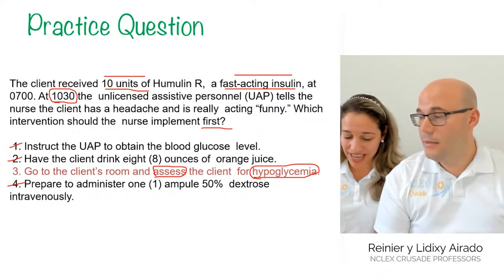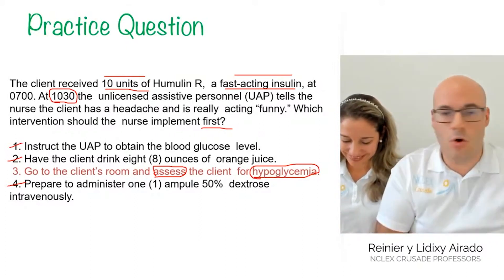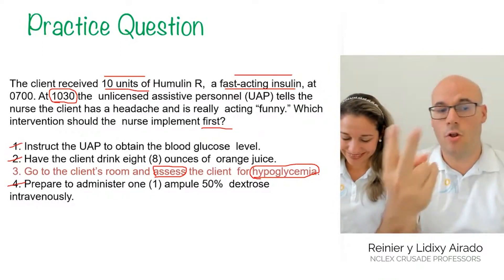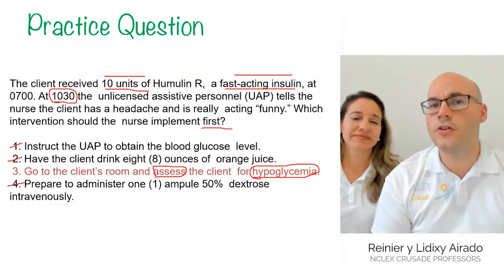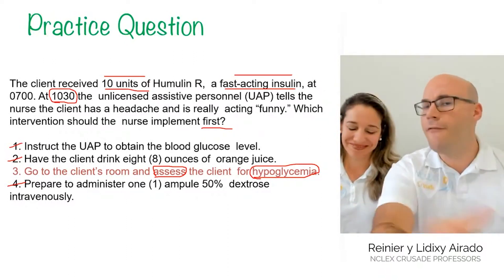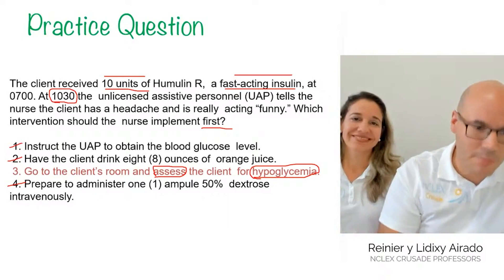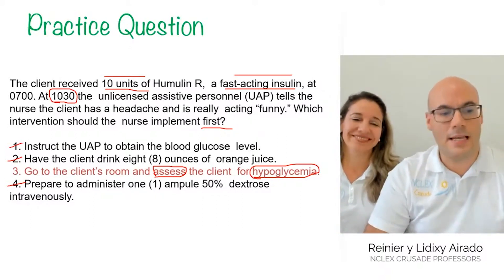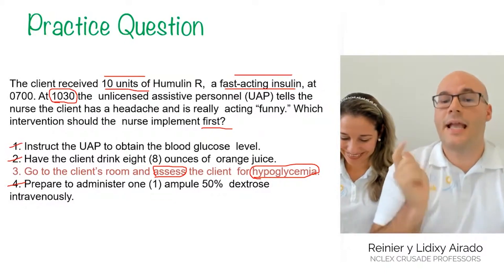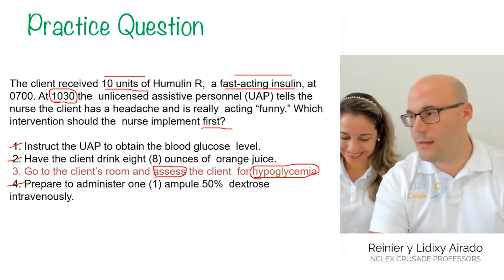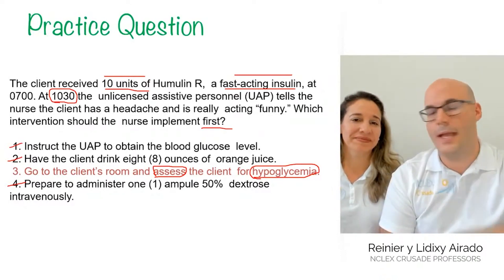If you were between option 2 and option 3: option 2 is an implementation, option 3 is an assessment. Look at the question — identify the five factors of an NCLEX question and you'll see the nurse has not yet done an assessment. If no assessment has been done, the first step of the nursing process is assessment — so option 2 is eliminated. If you were between option 3 and option 4, you can also apply the principle of least invasive to most invasive: option 4 is far too invasive for the patient described in the stem. The correct answer is option 3.